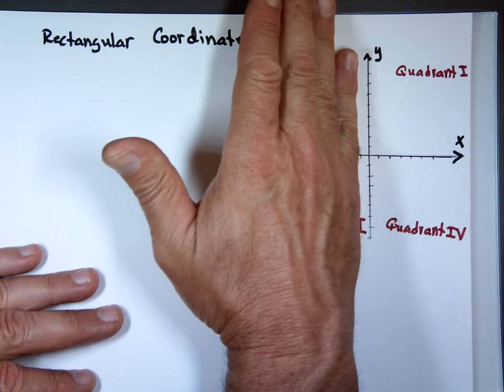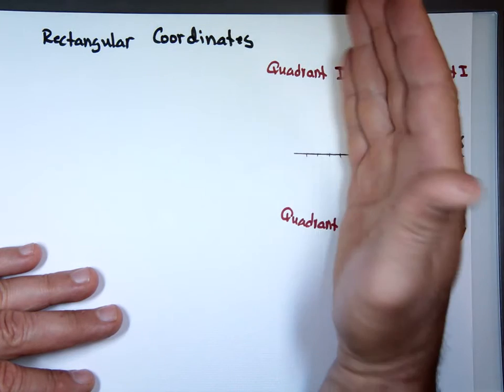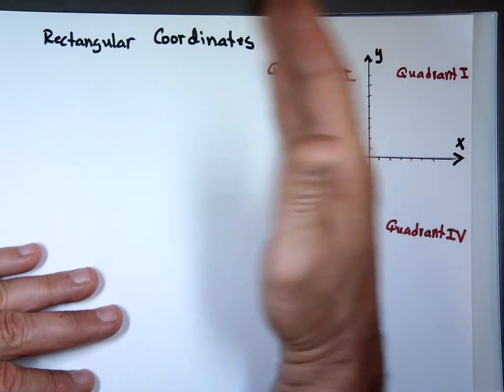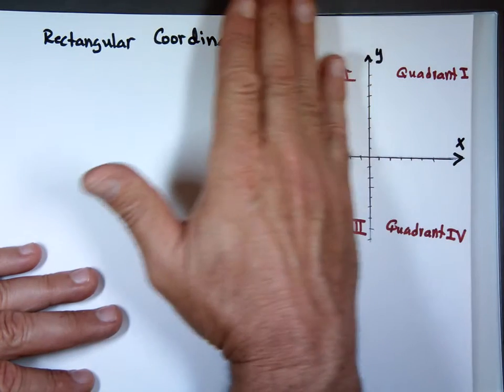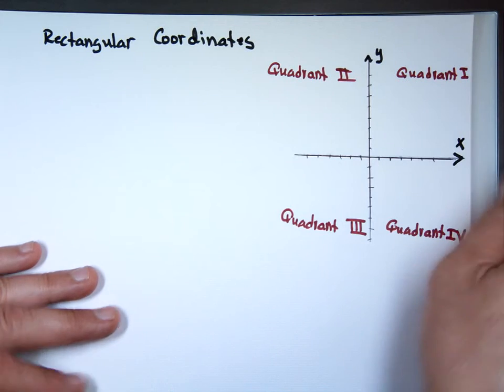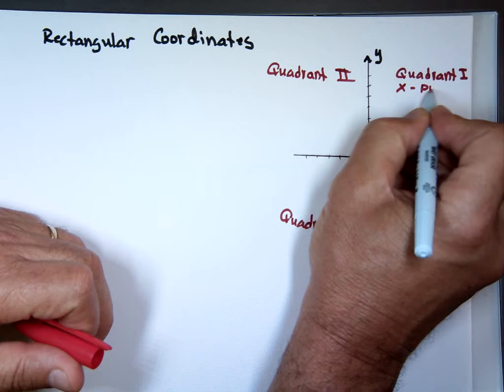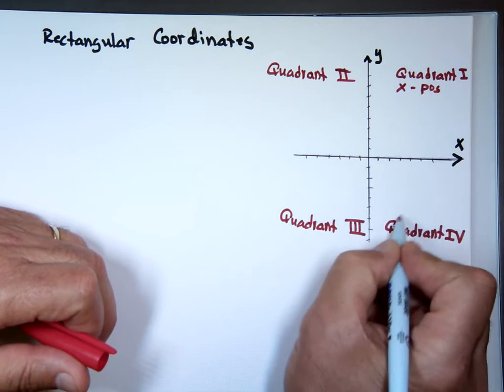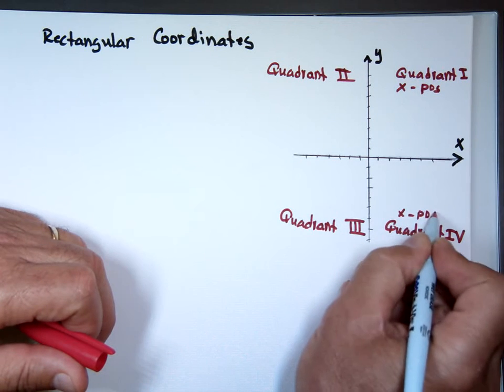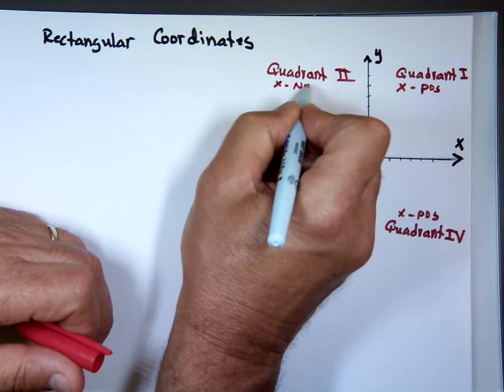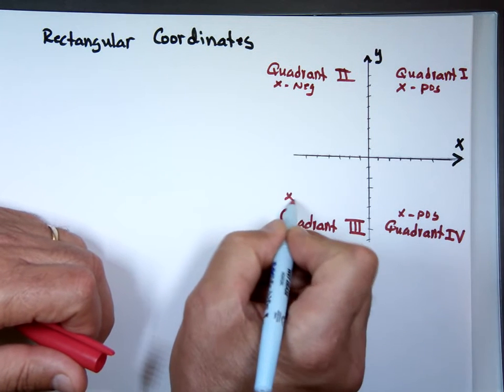X is positive to the right of this line. X is negative to the left of the y-axis. So X is positive in 1 and 4. X positive, X positive. X is negative to the left here. X is negative.